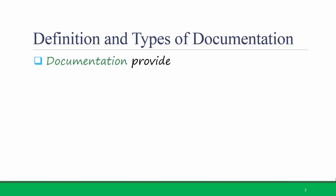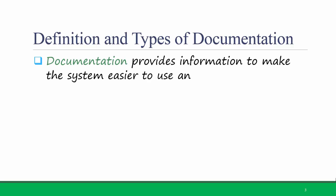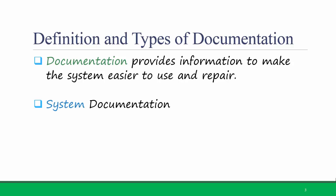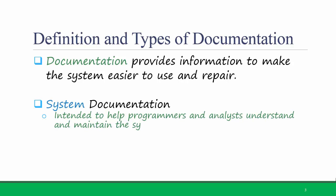Documentation provides information to make the system easier to use and repair. There are two types of documentation. System documentation is intended to help programmers and analysts understand and maintain the system after it's installed. System documentation can, and should, include all the analysis and design documents created in this course — including program design documents, well-commented coding, and any informal notes taken along the way.